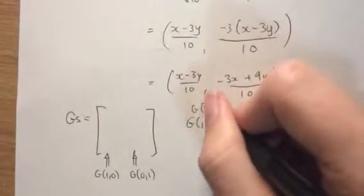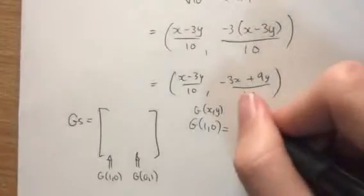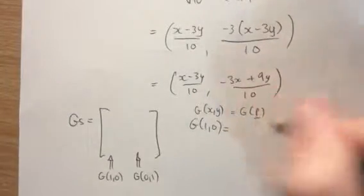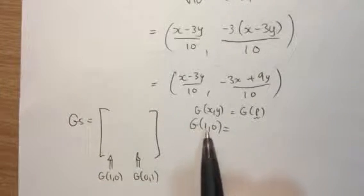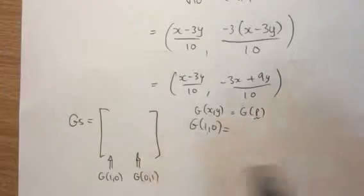Well, really, remember it's in the form G of P. P is just a vector with an X and a Y component. But really what we're saying here is we're saying X is 1, Y is 0. What happens?